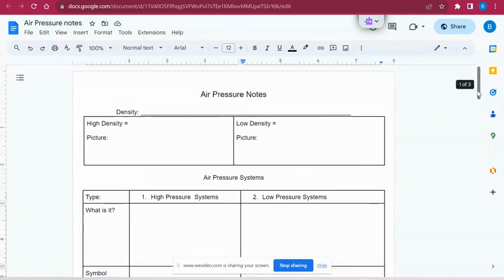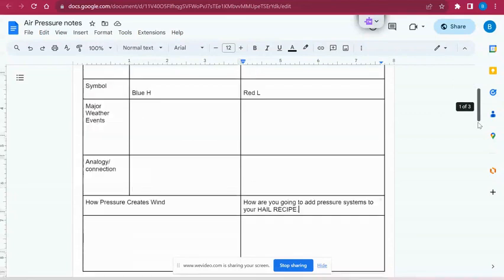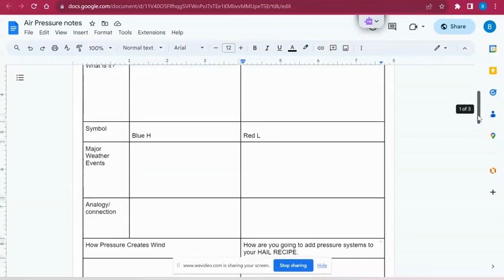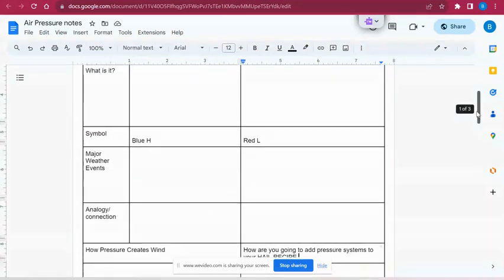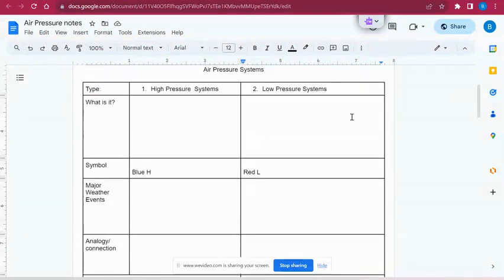We're going to talk about what a high pressure system is to fill in this table, then we're going to talk about what a low pressure system is to fill in this table. If you are not familiar with how a table works, it helps us organize key information about two different pieces. So we have a column for high pressure system and low pressure. As we go through each one, we'll be able to get this major information recorded for each of them to compare side by side.